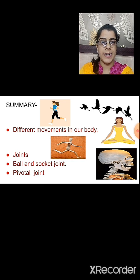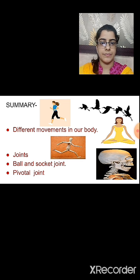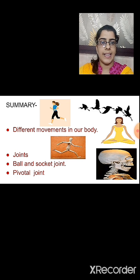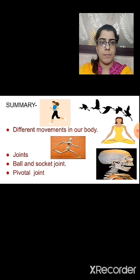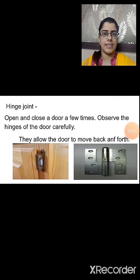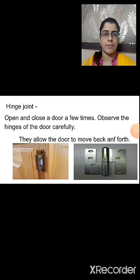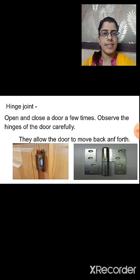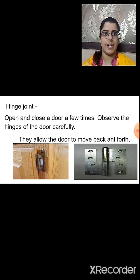The ball and socket joint allows complete movement of the body. Then we studied the pivotal joint, which is located in the neck and in the wrist region. I hope all these topics from our previous session are understood. Now let us study another joint present in our body — that is the hinge joint. Let us see how the hinge joint shows movement in our body.